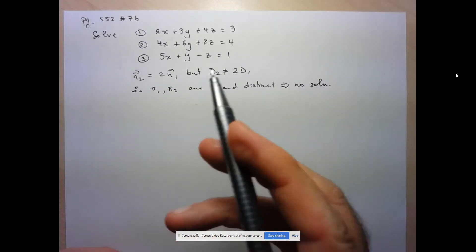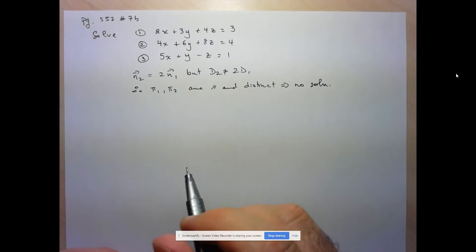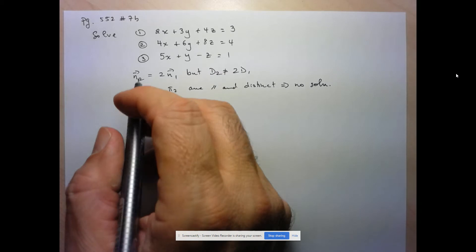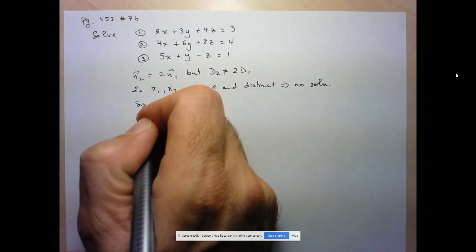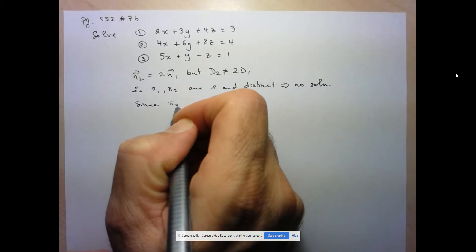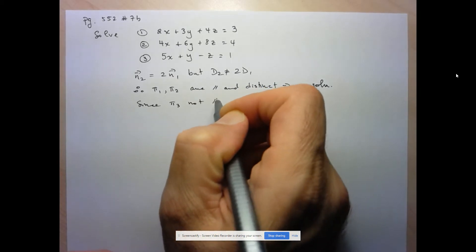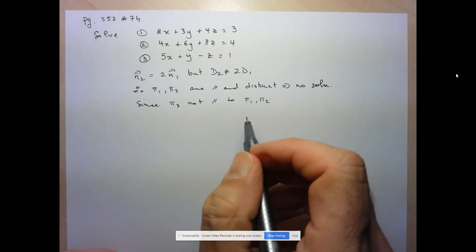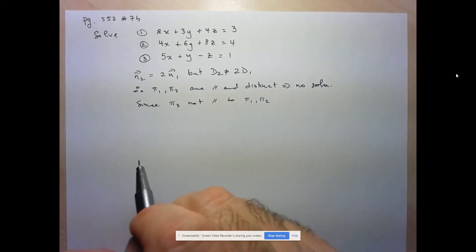Now they don't ask for it here, but we might as well take a look at the geometric interpretation. We can say since plane 3 is not parallel to planes 1 and 2, and I'm using pi here as the representation for planes,